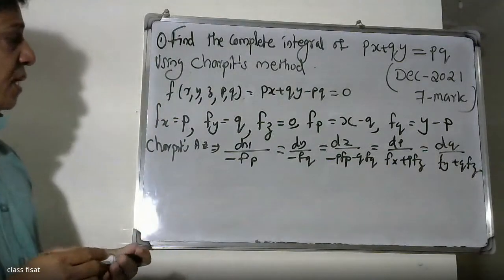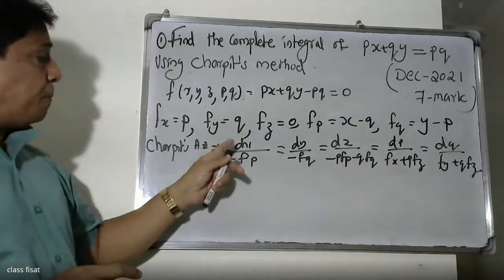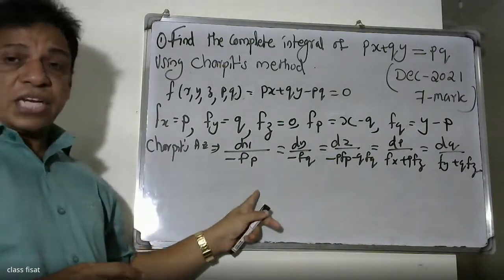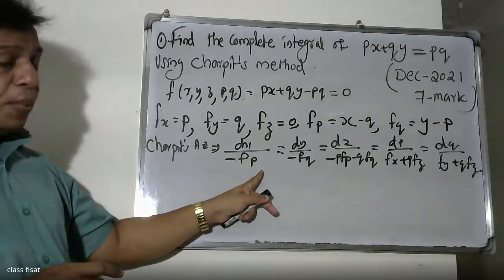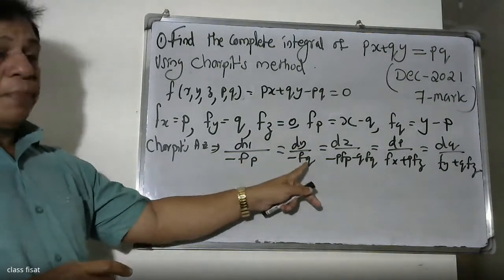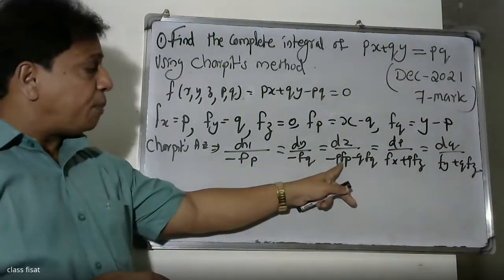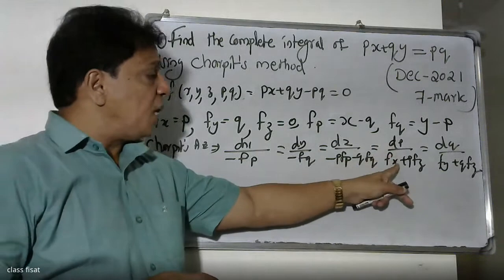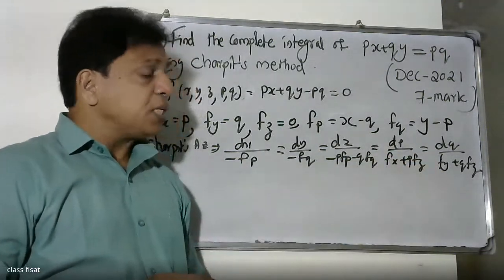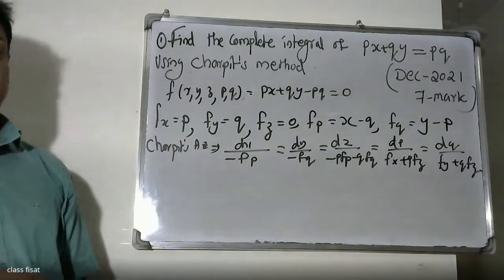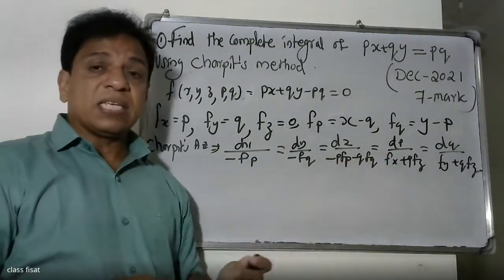Now the step we can do here is to write out Charpit's auxiliary equation. Charpit's auxiliary equation: dx by minus fp, dy by minus fq, dz by minus p times fp minus q times fq, dp by fx plus p times fz equals h, and dq by fy plus q times fz equals h. Now substitute the partial derivatives here.